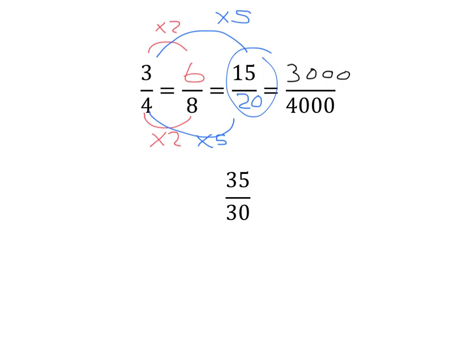This will also help us when we want to simplify fractions, because a fraction like 35 over 30 is not in its simplest form. To simplify fractions, we just find an equivalent fraction with smaller numbers. What number can divide into both 35 and 30? Hopefully you can see it's five. Divide the top and bottom by five — 35 divided by five is seven, 30 divided by five is six. So 35 over 30 is exactly the same as seven over six. We say seven over six is in its simplest form because there's nothing that can divide into both seven and six.